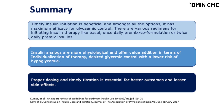In summary, timely insulin initiation is beneficial and the best option for achieving glycemic control. Various insulin regimens are available — we need to decide which suits our patient, whether it is basal insulin, a single dose of basal, premixed insulin, or prandial insulin alone. Insulin analogues are more physiological and offer the additional advantage of achieving glycemic control with lower risk of hypoglycemia. Proper dosing and timely titration are essential for better outcomes and fewer side effects. Thank you everyone for joining today's CME session.